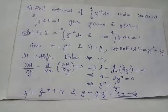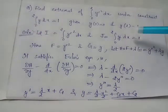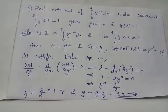Here we have F = y′² and G = y. We define H = F + λG, giving H = y′² + λy, where λ is the Lagrange multiplier.